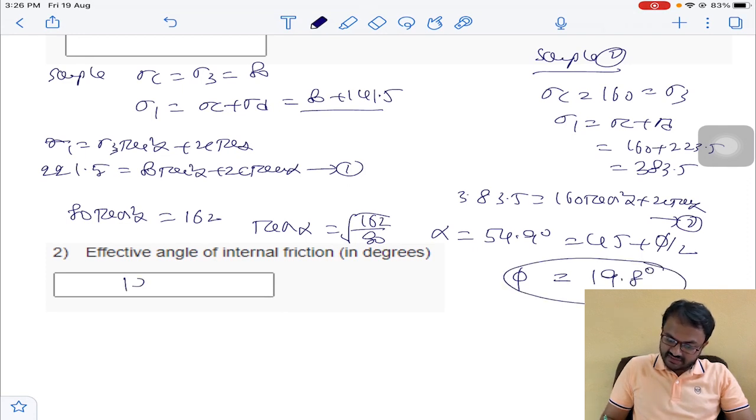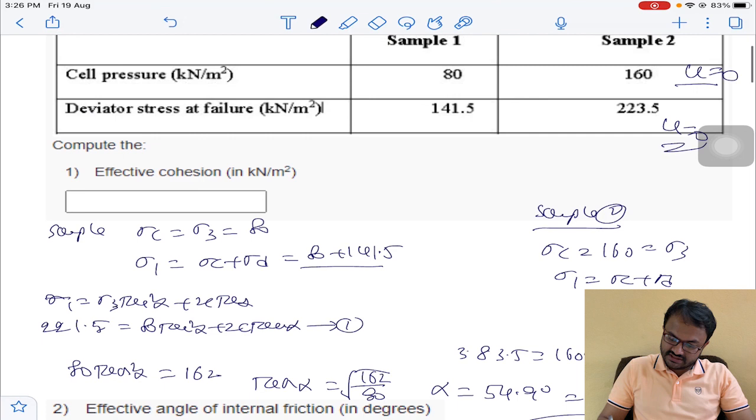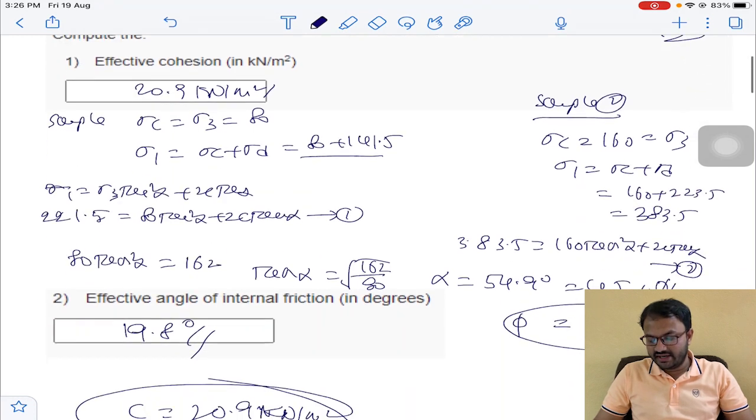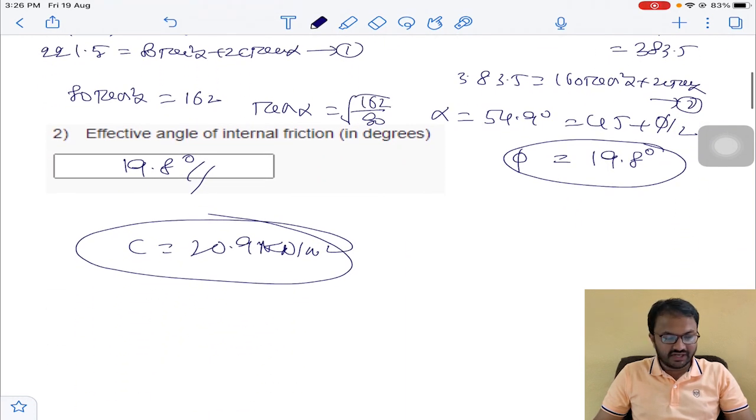You know alpha already is equal to 45 plus phi by 2. If you solve for value of phi, it is equal to 19.8 degrees. That is the angle of internal friction is 19.8 degrees. For effective cohesion, put the value there. You will get effective cohesion C is equal to 20.9 kilonewton per meter square. The effective cohesion will become 20.9 and the angle of internal friction will become 19.8.